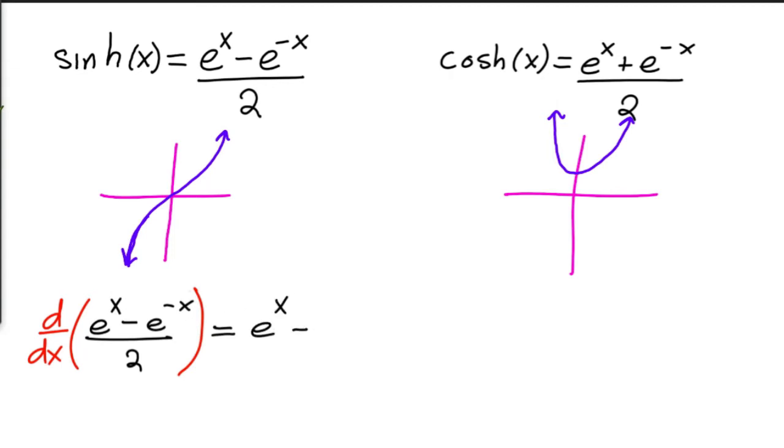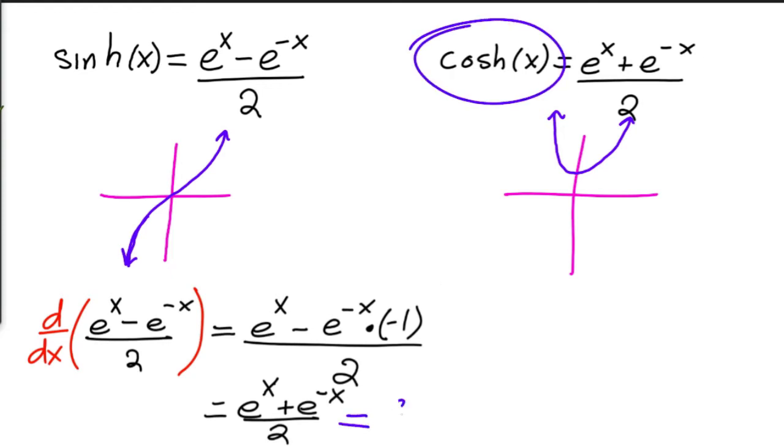So this is simply the derivative of e to the x is e to the x, and then minus the derivative of e to the negative x is, we use the chain rule, so it's simply itself times the derivative of the inside, which is negative 1. Divide this by 2, and you get e to the x plus e to the negative x over 2, and you'll notice that this is exactly equal to cosh of x.